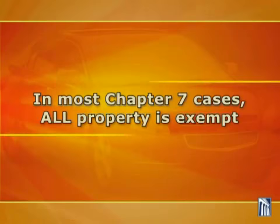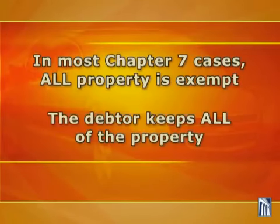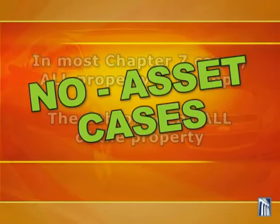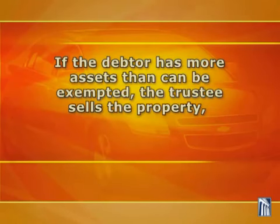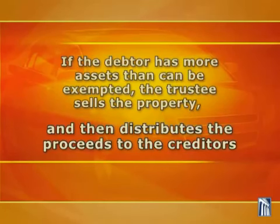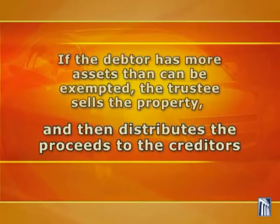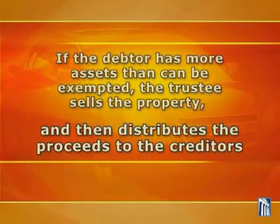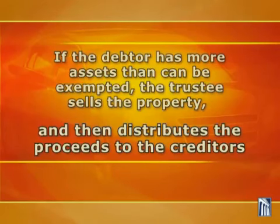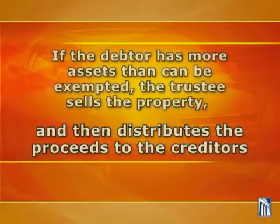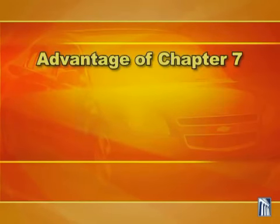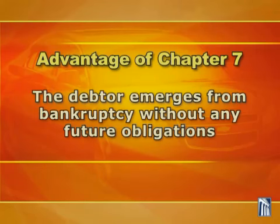In most Chapter 7 cases, all property is exempt, and so the debtor keeps all of the property. Those cases are sometimes called no-asset cases. If a debtor has more assets than can be exempted, the trustee sells the non-exempt property and distributes the proceeds to the creditors according to priorities established by law. Very often, there is not enough money to pay for anything more than the cost of administration, and so the creditors receive nothing. The principal advantage of Chapter 7 is that the debtor emerges from bankruptcy without any future obligations on his or her discharged debts.